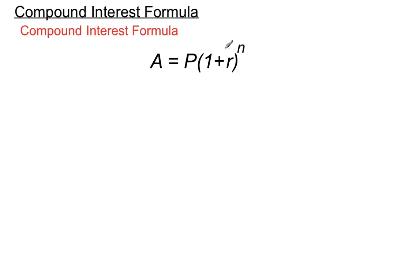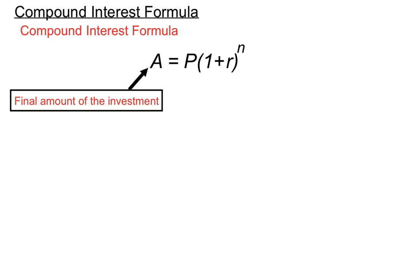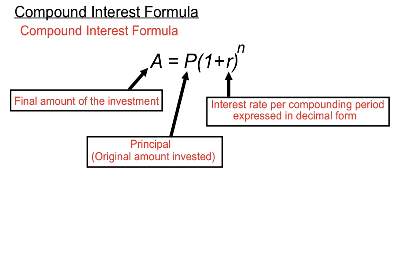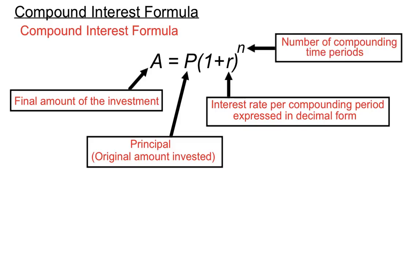Now there's a compound interest formula we can use, so let's have a look at the parts of that. It's A equals P times (1 plus R) to the power of N. The A stands for the final amount of the investment — and just a word of warning, that final amount includes the original principal plus any interest that's been accrued. P stands for the principal, which is the original amount invested. R stands for the interest rate per compounding period, expressed in decimal form. And N is the number of compounding time periods.